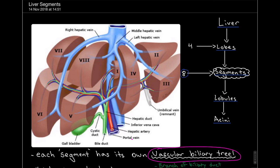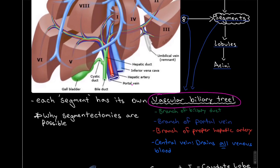Each one of these segments has their own vascular biliary tree which is very important because upon removal of one of these segments the rest of the liver can remain nourished and still function properly.